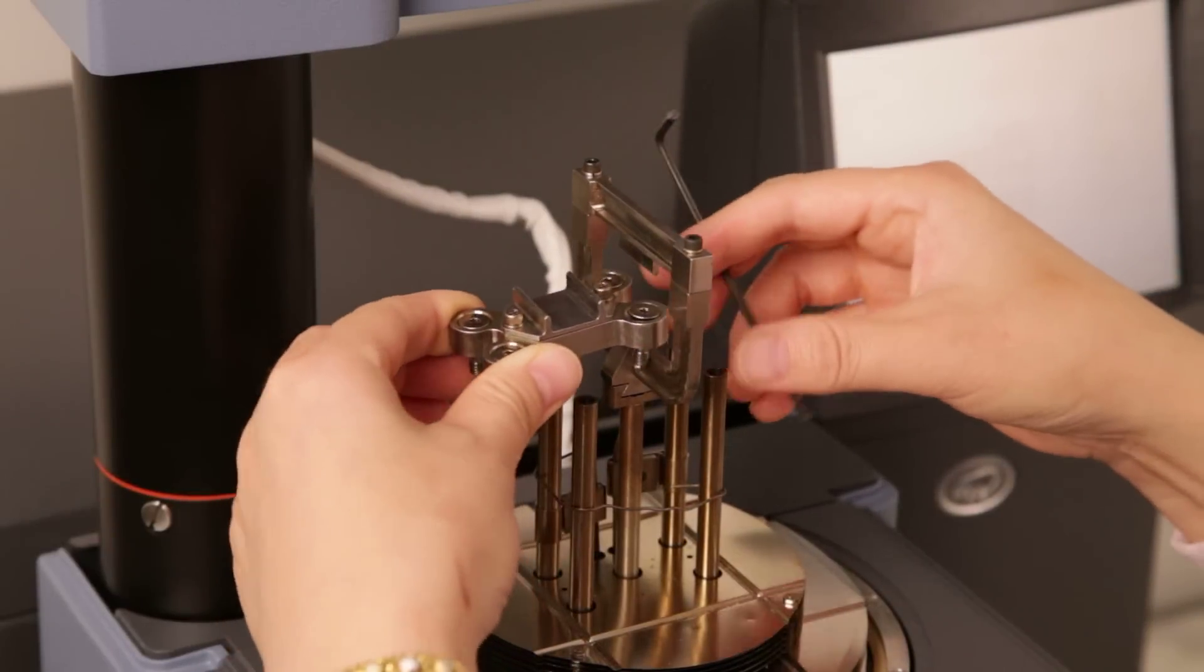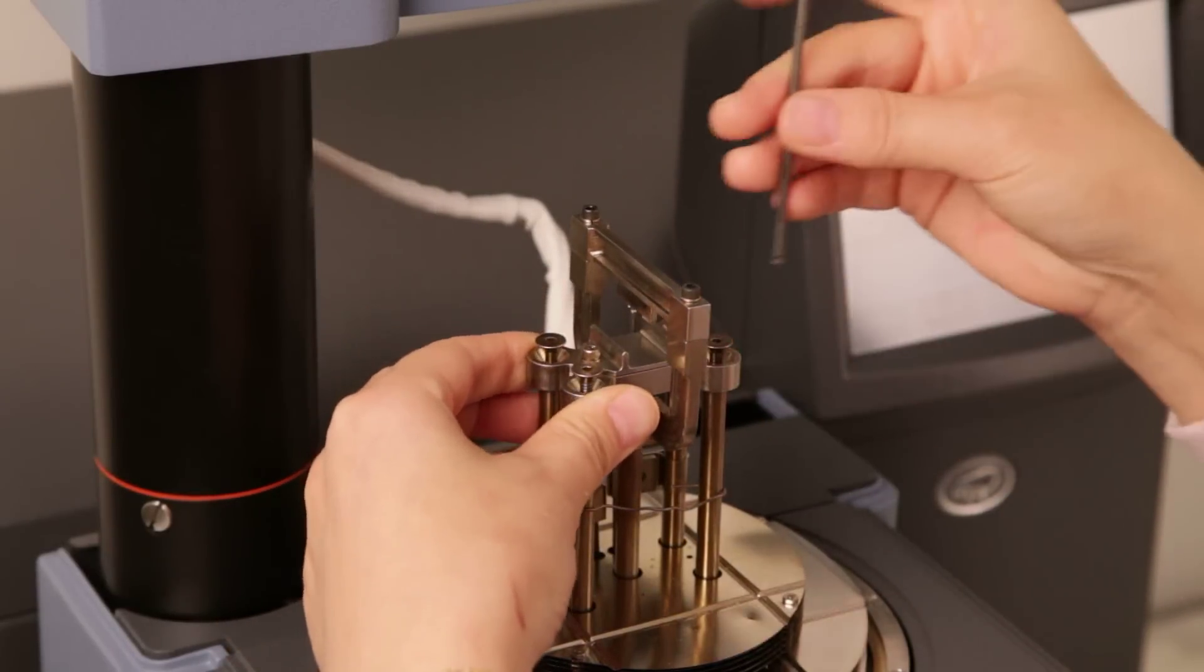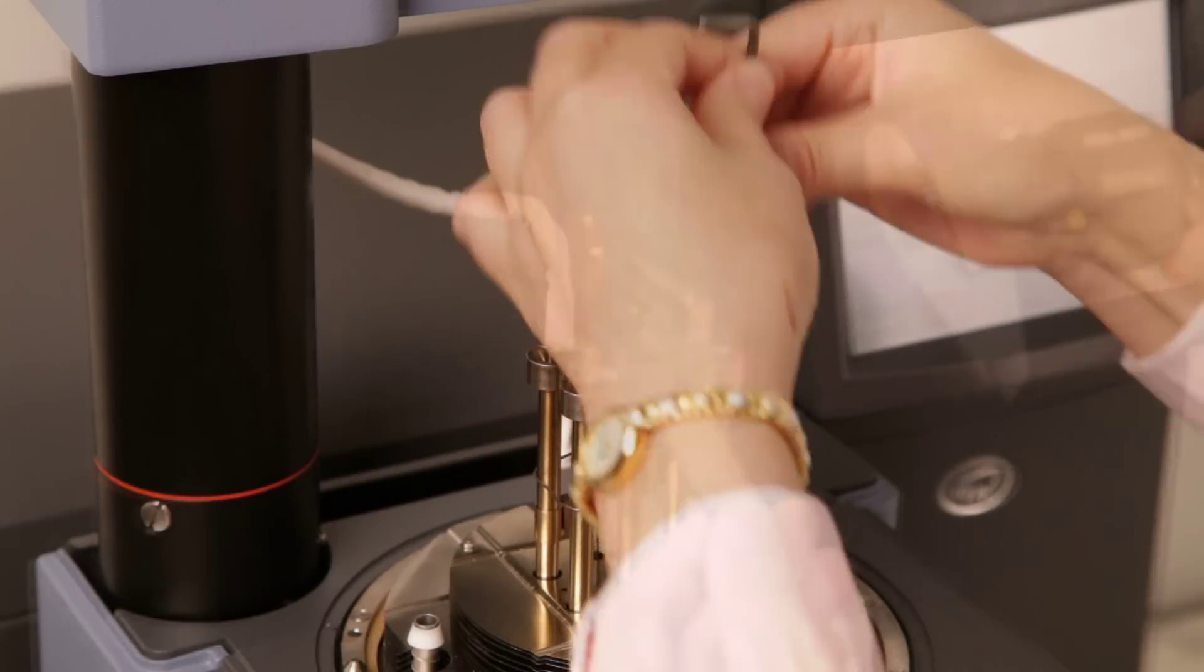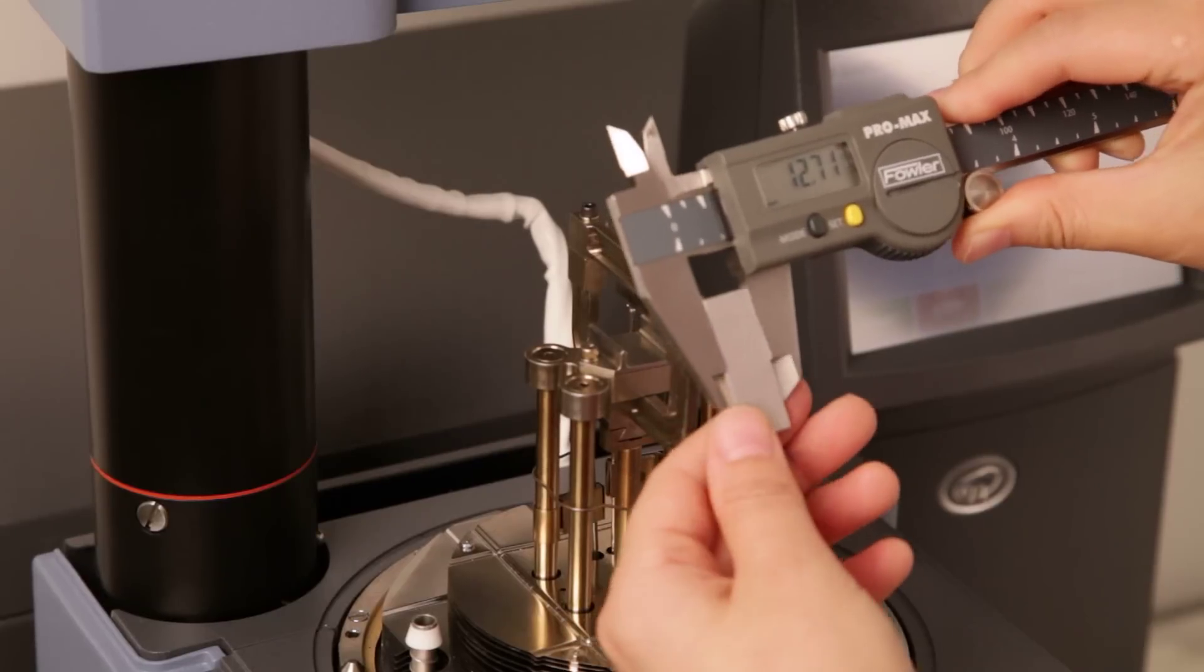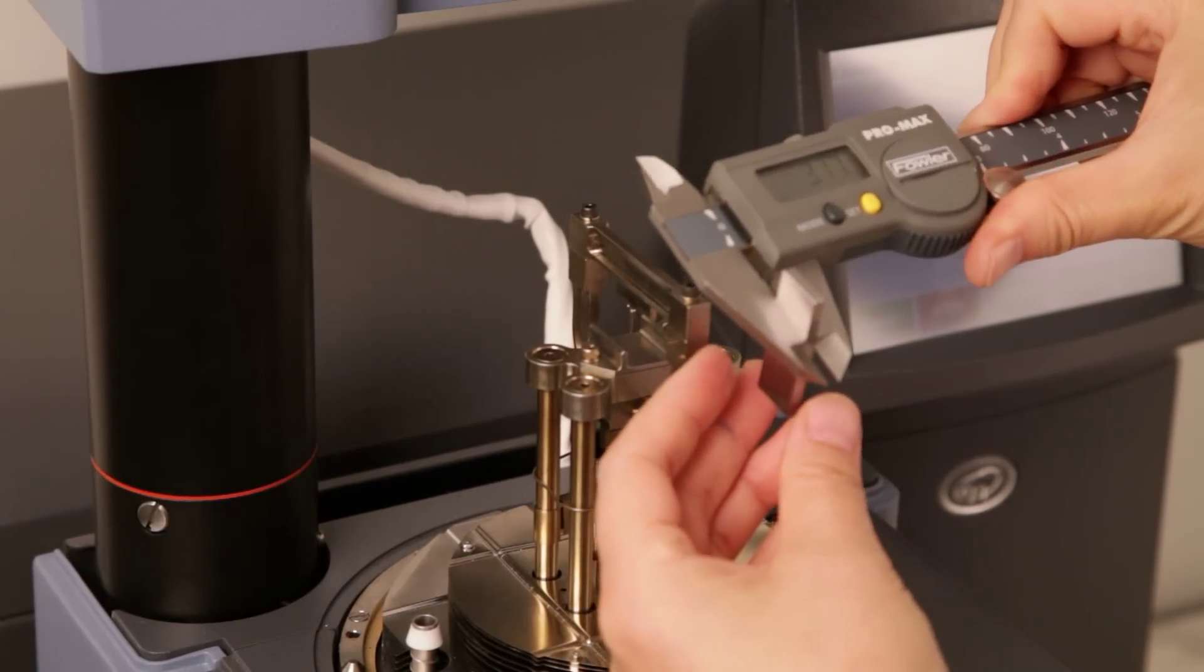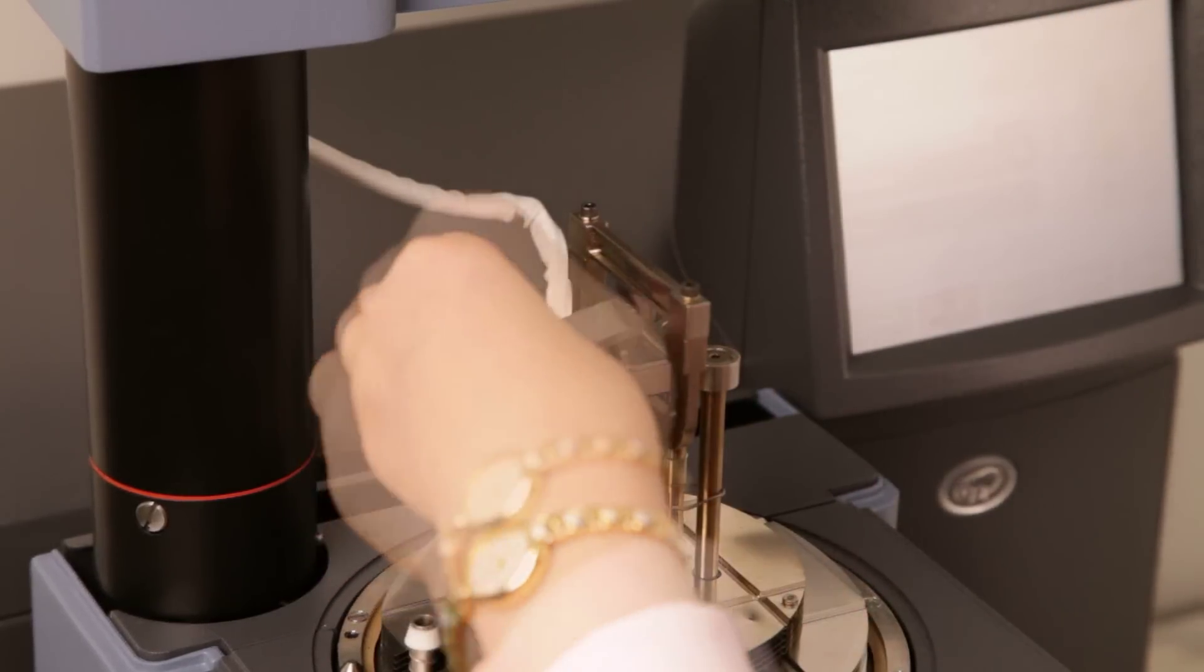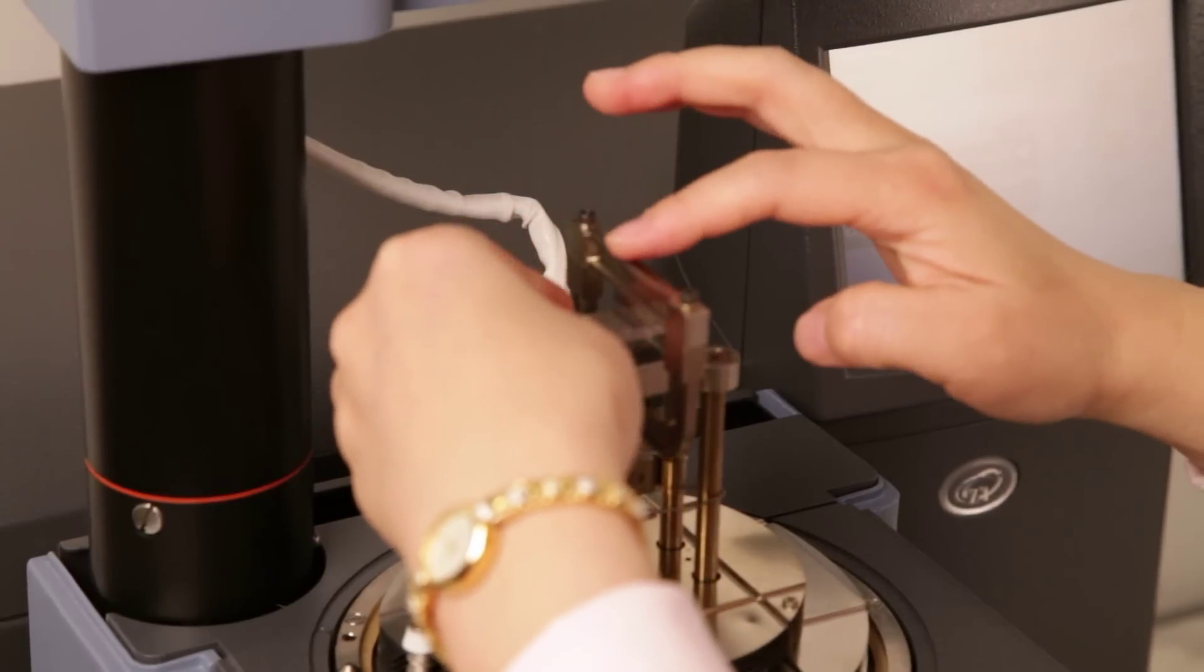After the mass calibration, install the stationary clamp to the instrument. Take the compliant steel bar from the clamp kit, use a caliper to measure its width and thickness, then load this bar to the clamp.